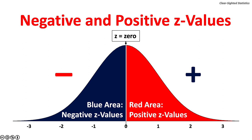The population mean is at zero. The area in red contains random variables that are above the population mean — in this case, the z-values are positive. The area in blue contains random variables that are below the population mean — in this case, the z-values are negative.